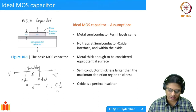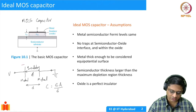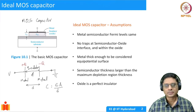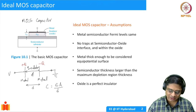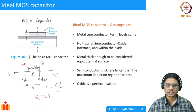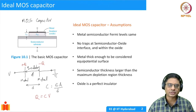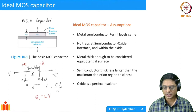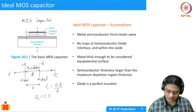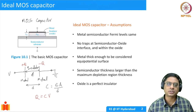If you apply a positive charge +Q at a certain voltage, immediately there will be a −Q charge on the other side. The capacitance is the relation between Q and V — you apply a voltage, the device stores a certain amount of charge. Plus Q on one side, minus Q on the other. This is a simple capacitor. A MOS capacitor is similar, but one of the plates is a semiconductor instead of a metal.